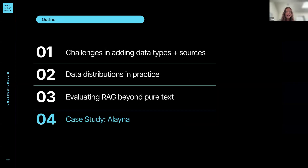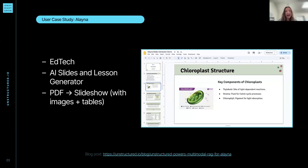Now we're going to dive into our case study with Elena. Elena is an EdTech company with an AI slides and lesson generator. You just drop in a PDF and they generate a slideshow with images or tables. On the right is an example of some slides you might get — they have equations and images next to the relevant text, and they do this pretty much instantaneously. I actually wish I had something like this when I was making my slides.